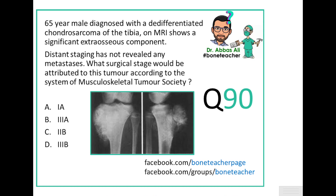Let's look at this question. A 65-year-old male diagnosed with de-differentiated chondrosarcoma of the tibia. An MRI shows a significant extra-osseous component; distant staging has not revealed any metastasis. What surgical stage would we attribute to this tumor according to the system of the Musculoskeletal Tumor Society? An X-ray has also been provided.